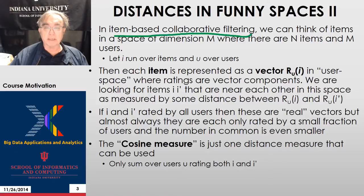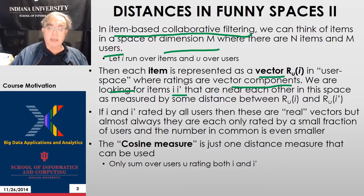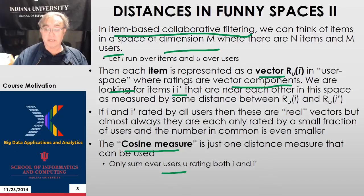Alternatively, if you do item-based collaborative filtering, you think of items as the points in a space of dimension M, where there are M users. Each item is represented as a vector in a user space, and the ratings of the users are the vector components. We're looking for items that are near each other as measured by the distance between these vectors. Again, we use a so-called cosine measure, where we only sum over users — the vector components — which rate both of the two things we're comparing. So again, these are an example of a funny distance.